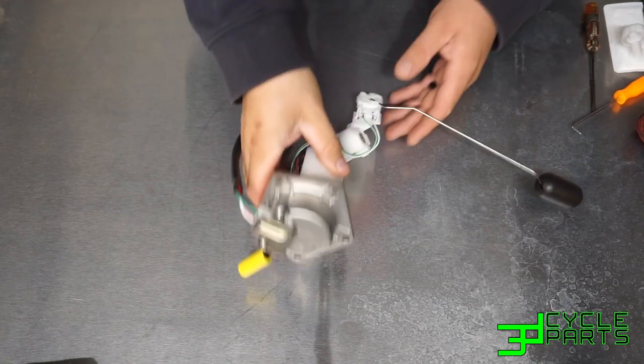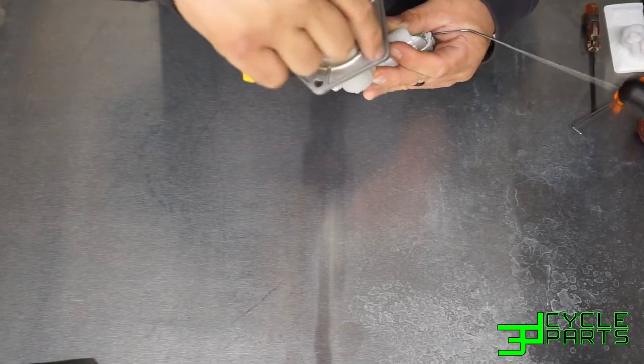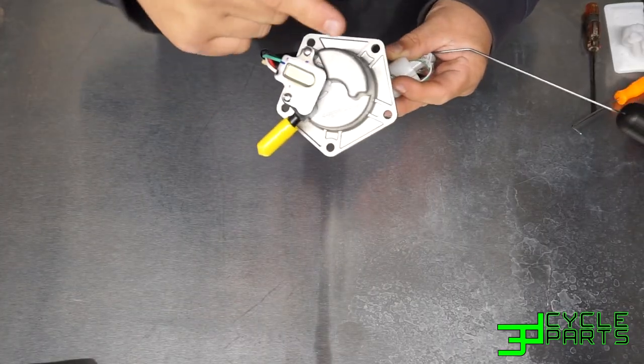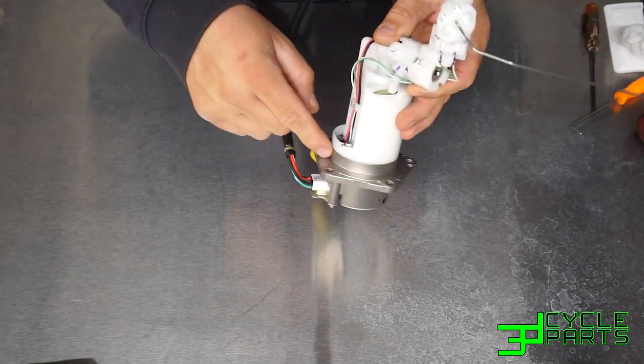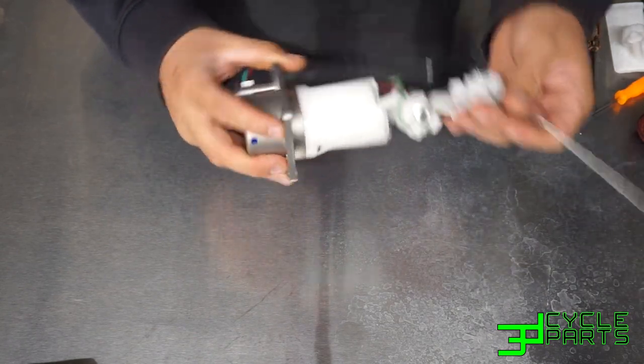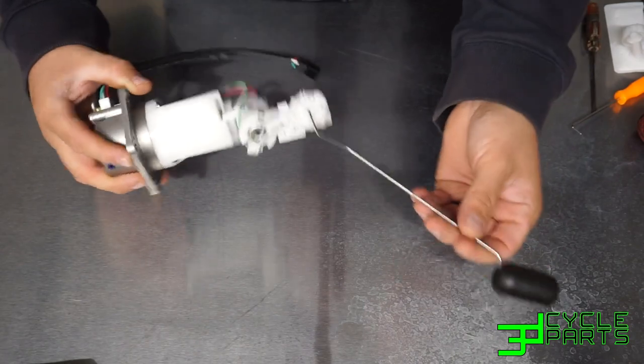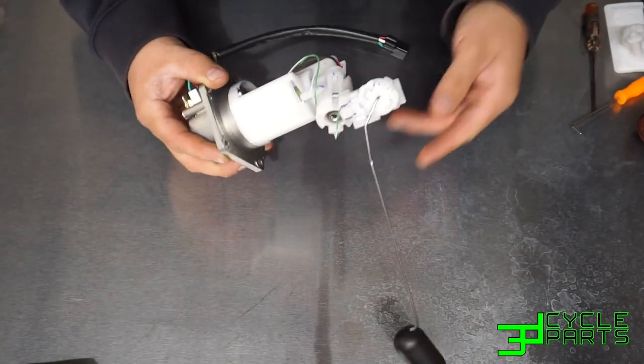Once you pull the tank off, this will be bolted into the bottom. Use a 10 millimeter socket or wrench to remove the five bolts. There's a big fat o-ring under there that seals the pump off to the flange. You remove those and just pull it out gently making sure you don't damage your float for your sending unit for the fuel gauge.